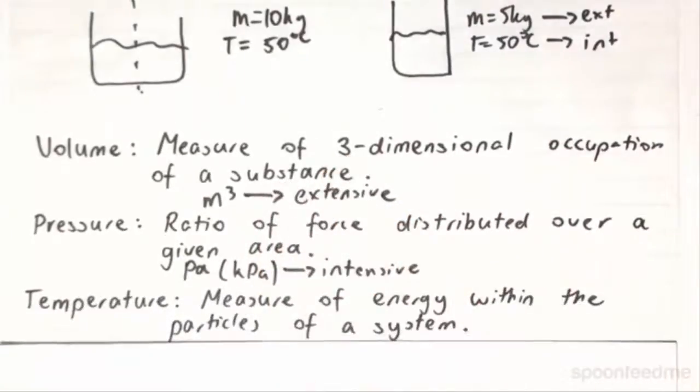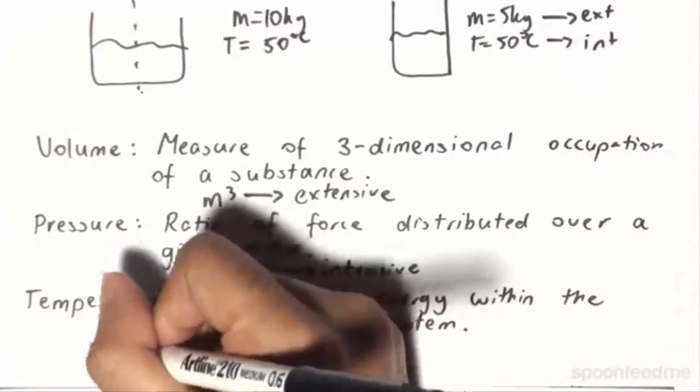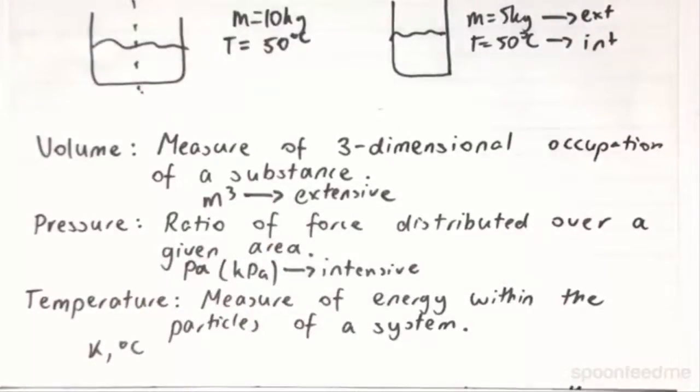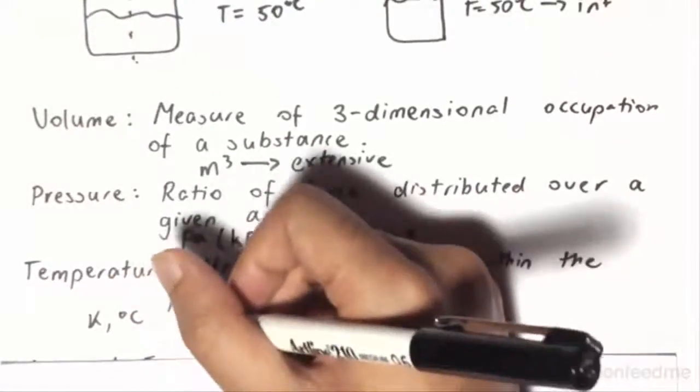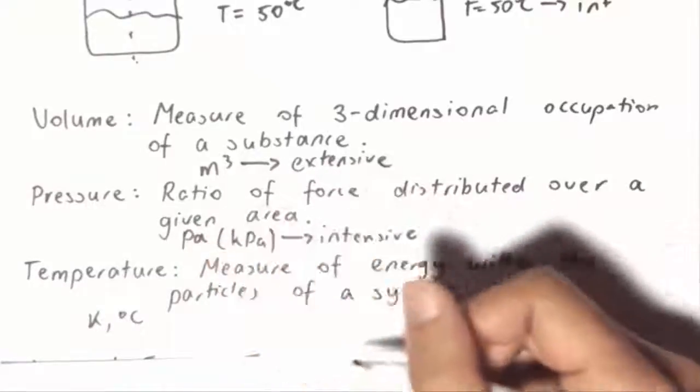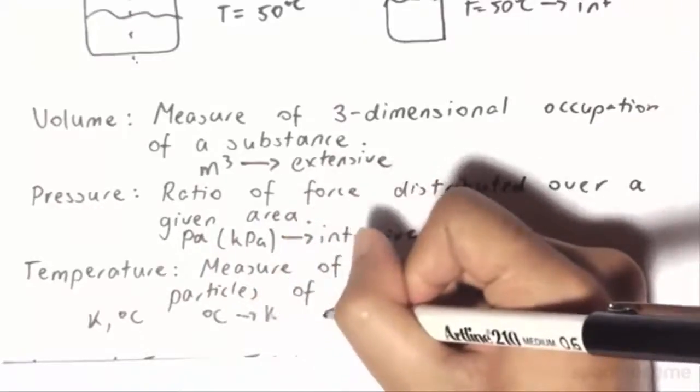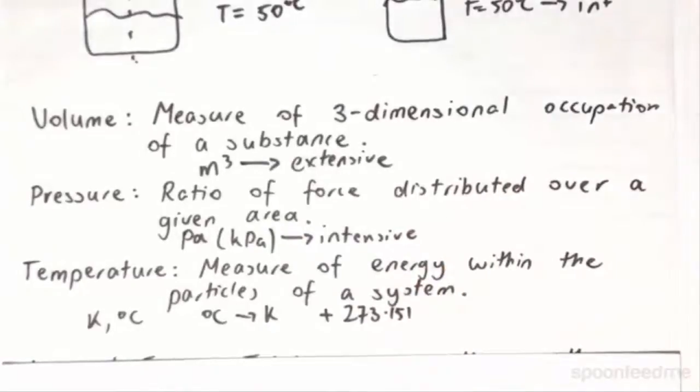Temperature is the measure of energy within the particles of a system. It is going to be measured in equations in Kelvin. However, sometimes it is given in degrees Celsius in different sets of data. The way we can relate the two is that to change from degrees Celsius into Kelvin, we just have to add 273.15 to get the temperature in Kelvin.